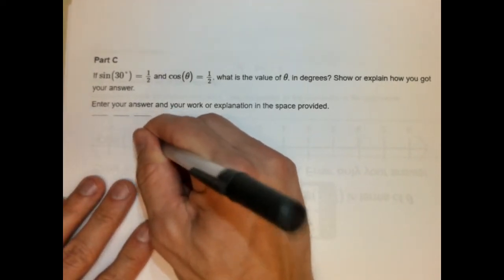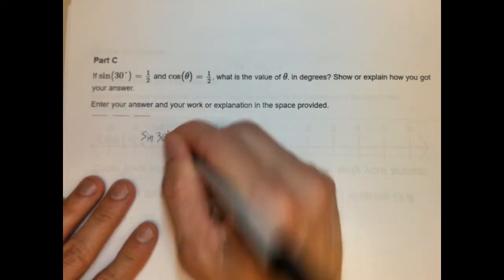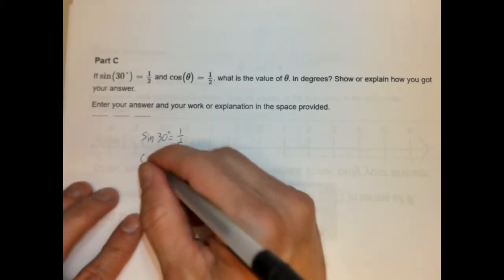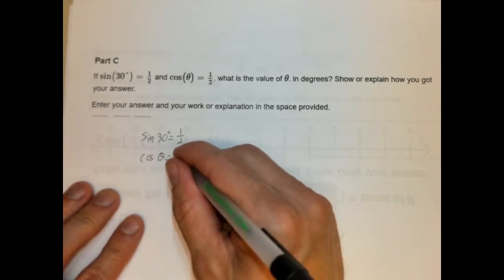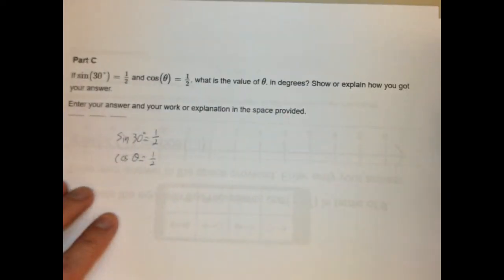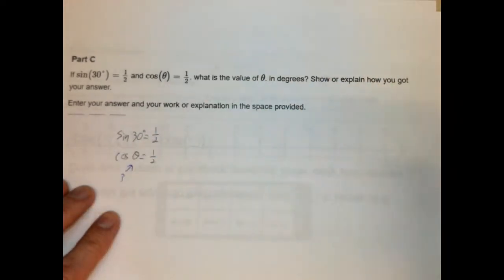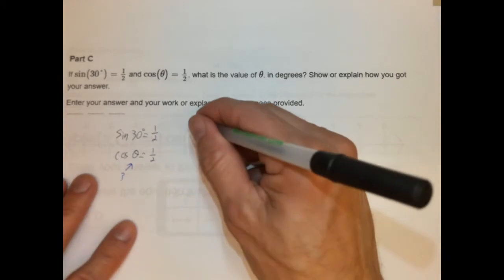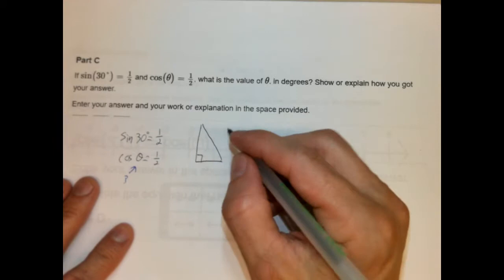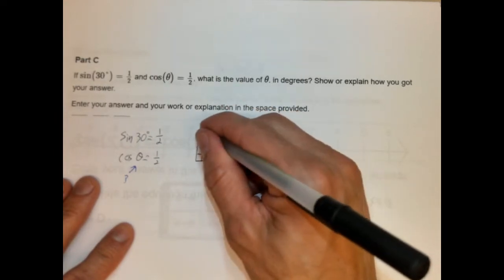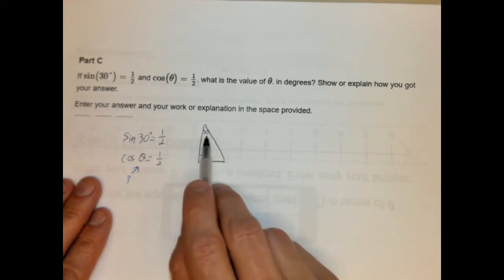Well, first I'm actually going to write this. I'm going to write sine of 30 degrees is 1 half. Okay? And then cosine of theta equals 1 half. What is this? What's theta going to be? So I'm going to draw a triangle. Okay? I'm going to draw a right triangle, because if we're using trigonometry, it has to be a right triangle.